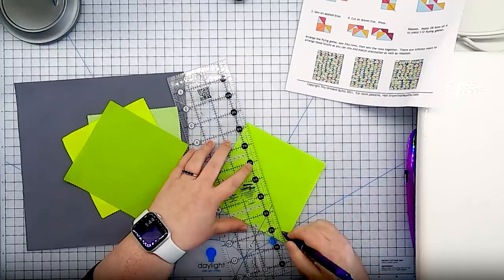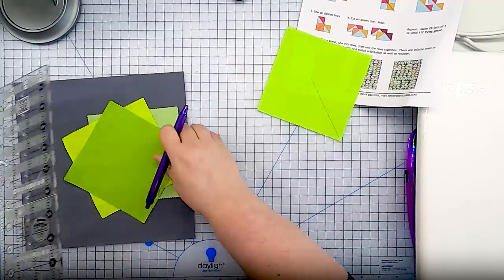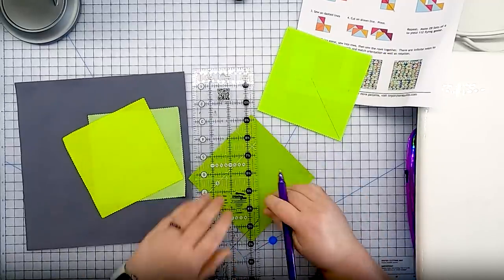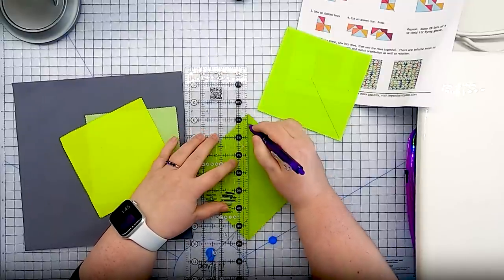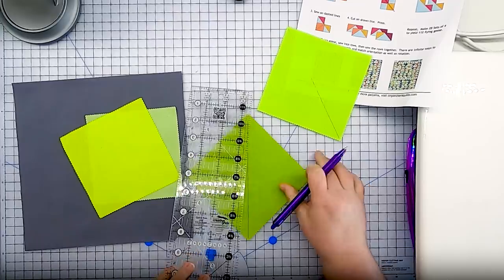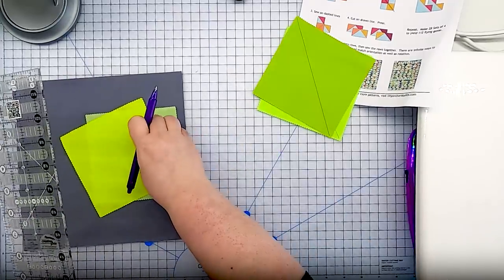The first thing we're going to do is mark a diagonal line on the back of each of our small squares. I'm using a pen here. You can use a pencil. You can press this line in by folding your squares in half